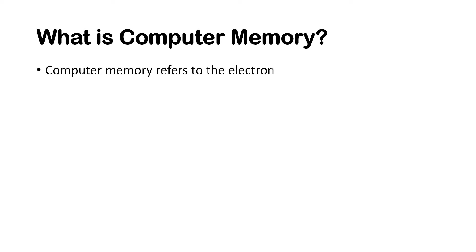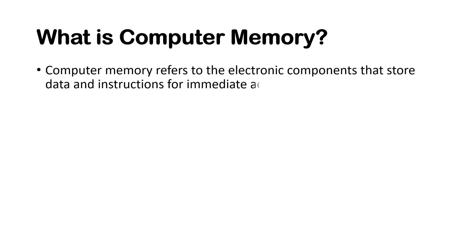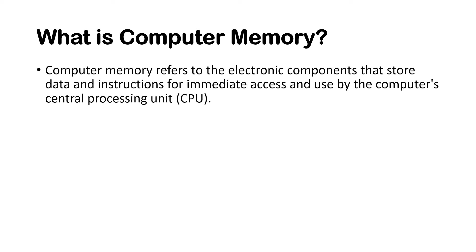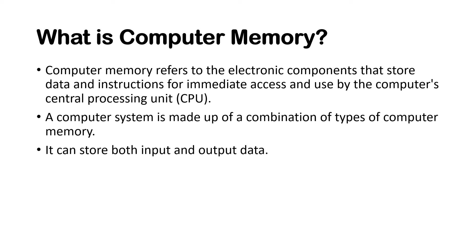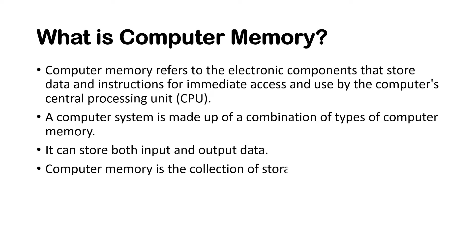Computer memory refers to the electronic components that store data and instructions for immediate access and use by the computer's central processing unit, or CPU. A computer system is made up of a combination of types of computer memory. It can store both input and output data. Computer memory is the collection of storage units that store binary information in bits.